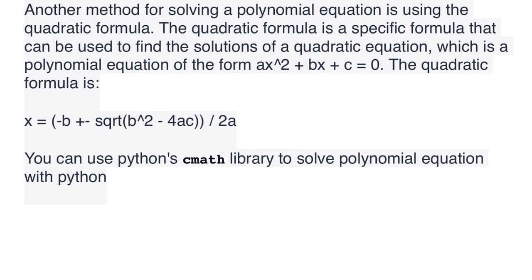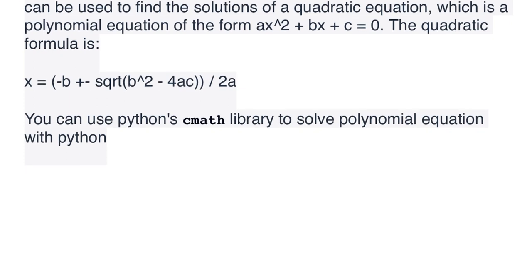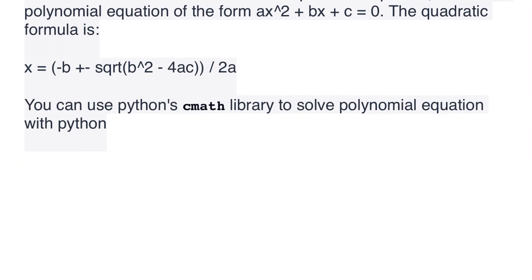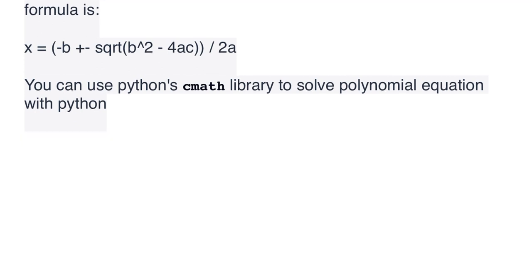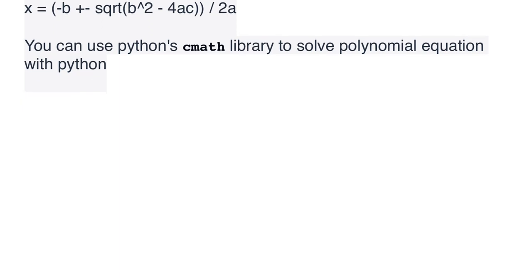Another method for solving a polynomial equation is using the quadratic formula. The quadratic formula is a specific formula that can be used to find the solutions of a quadratic equation, which is a polynomial equation of the form ax^2 + bx + c = 0. The quadratic formula is x = (-b ± sqrt(b^2 - 4ac)) / 2a. You can also use Python's math library to solve polynomial equations.